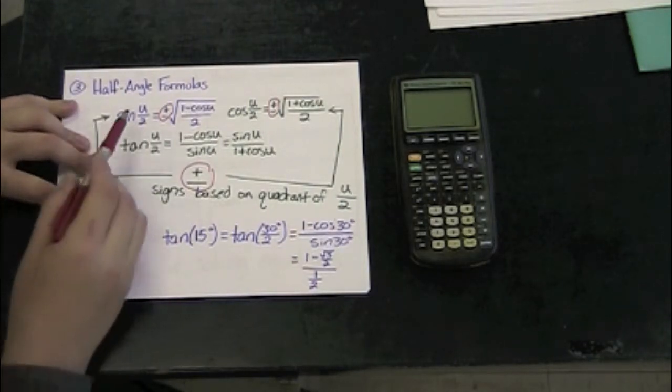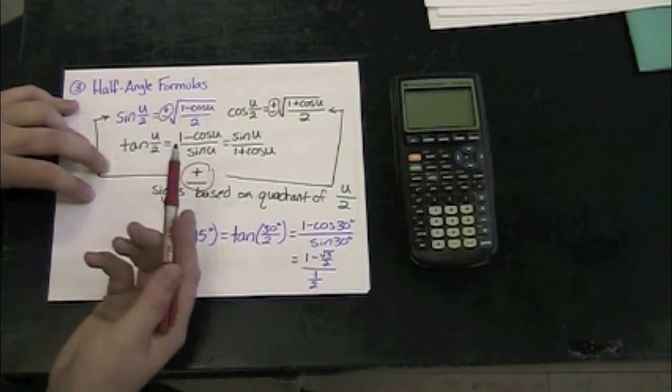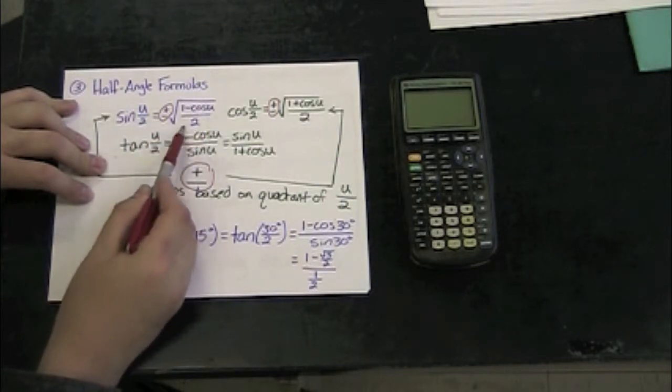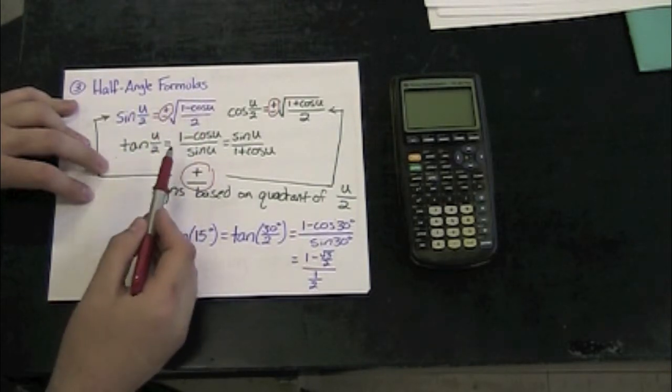So if we look at the sine of u divided by 2, if we're in the first or second quadrant, this would be a positive answer, which means we're going to use the positive square root of 1 minus cosine of u over 2.